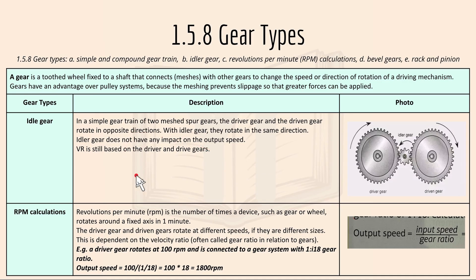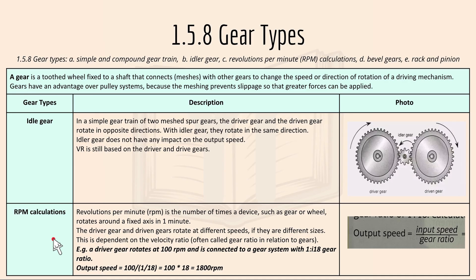With an idle gear inserted into a simple gear train, the driver and driven gears rotate in the same direction instead of opposite directions. The idle gear does not affect the output speed; the velocity ratio is still based on the driver and driven gears only. RPM — revolutions per minute — is the number of times a gear or wheel rotates around a fixed axis in a minute. If a driver gear rotates at 100 RPM and is connected to a gear system with a 1 to 18 gear ratio, the output speed is 100 times 18, which is 1,800 RPM.